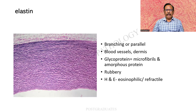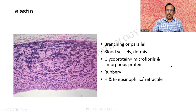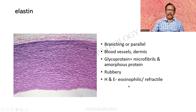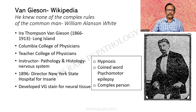This is another friend — the elastin. Beautiful, slender, wavy, parallel or branching. They occur normally in the blood vessels and in the dermis. Glycoprotein equals microfibrils plus amorphous protein. The elastin by itself has a rubbery consistency; that is why it can recoil — that is the property of the elastin. Under routine H&E stains, they are all eosinophilic and refractile; beyond that we will not be able to see them. But here, almost each fibril has been individually brought out beautifully.